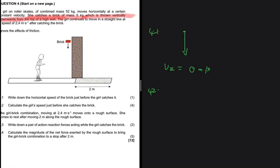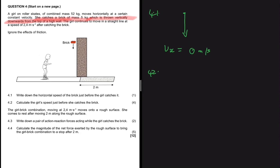Moving to 4.2: calculate the girl's speed just before she catches the brick. A girl on roller skates with a combined mass of 52 kg moves horizontally at a certain constant velocity — that velocity is unknown and what we're looking for. She catches a brick of mass 5 kg which is thrown vertically downwards, so it has a horizontal velocity of zero, as established in 4.1.